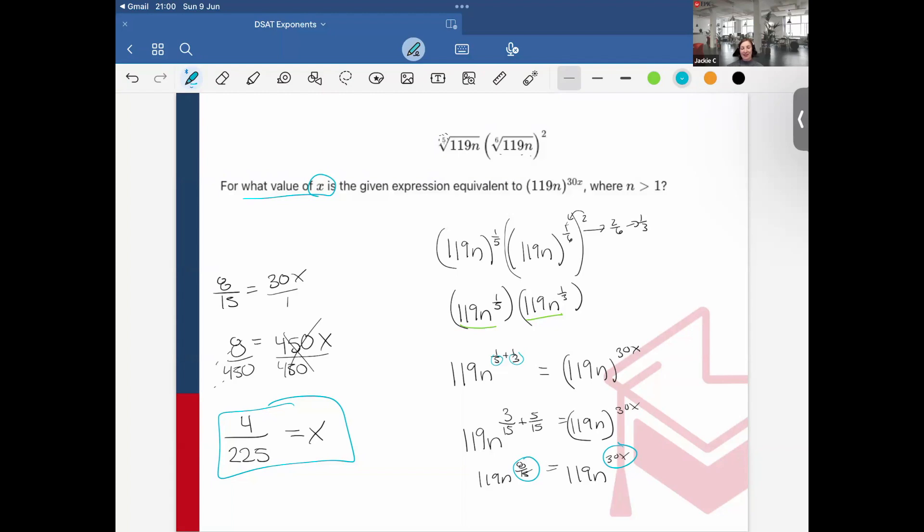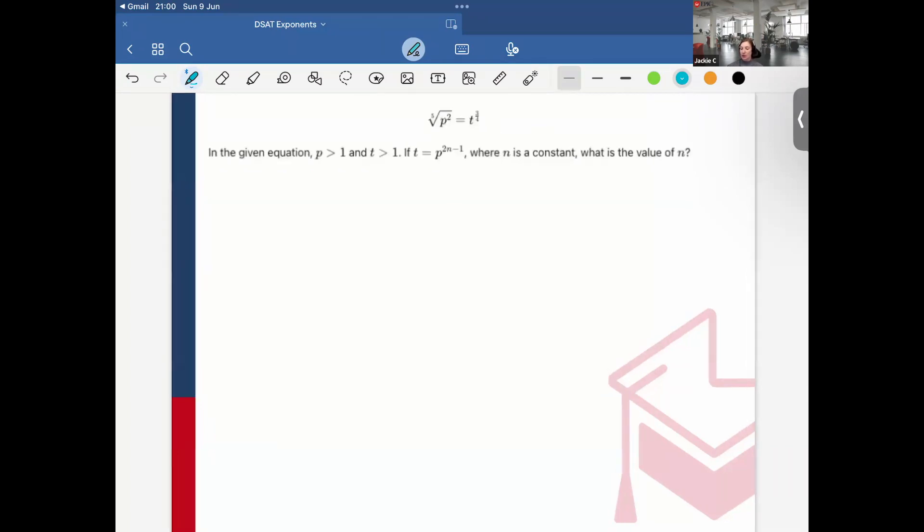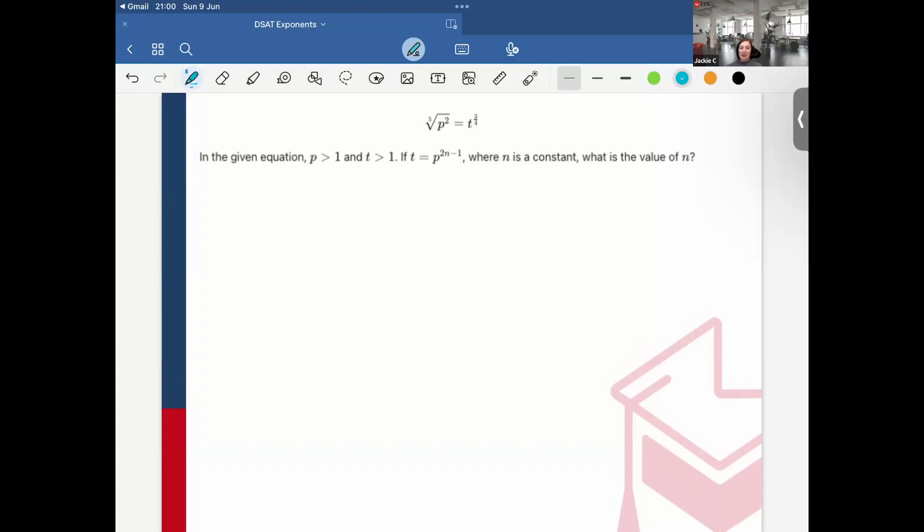You could also look at another exponent question that appeared on June 2024 digital SAT. Similar question, which was this one here. I think this one's a little easier, but let's just take a look. So I have 5 root p squared is equal to t to the 3 fourths.